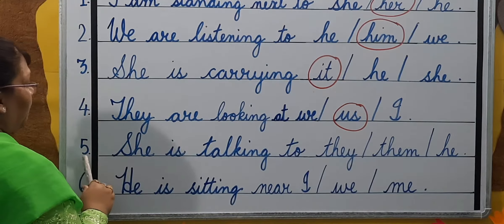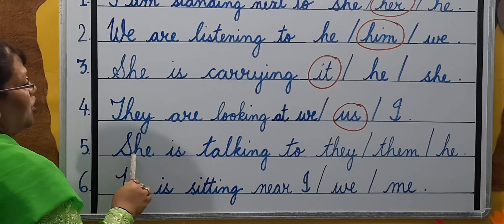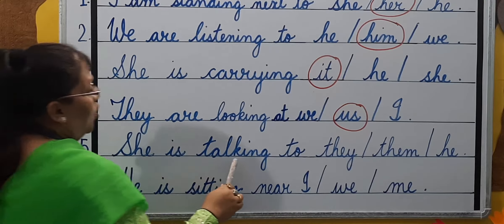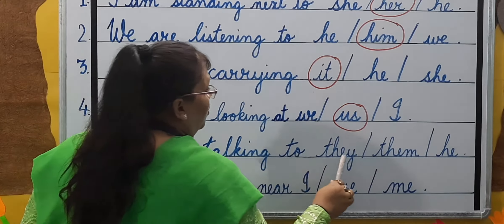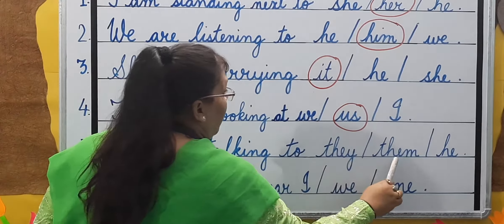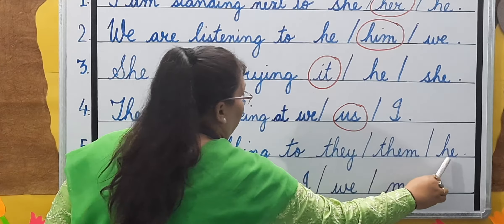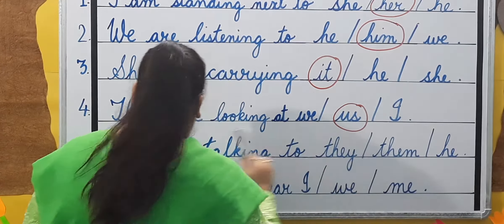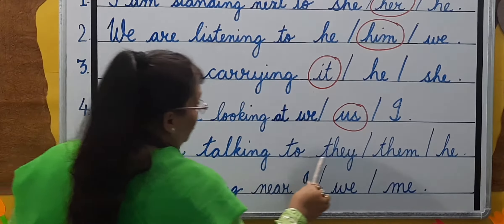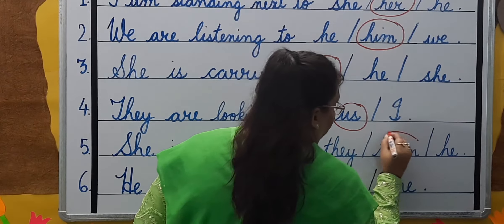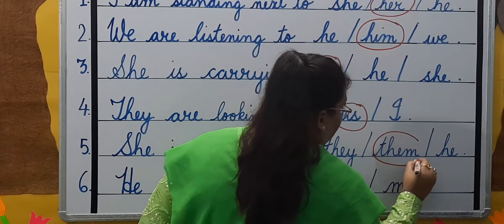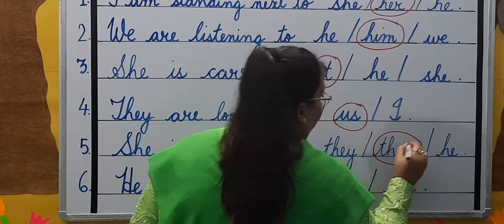Number five: She is talking to — they, them, or he? She is talking to them is the correct answer.